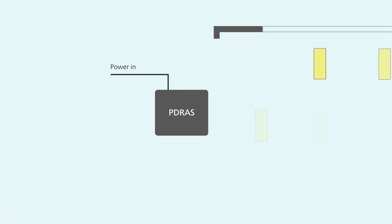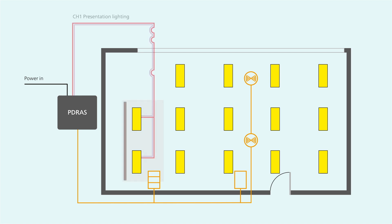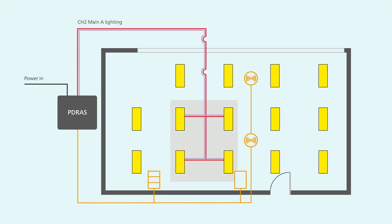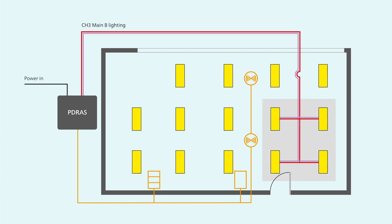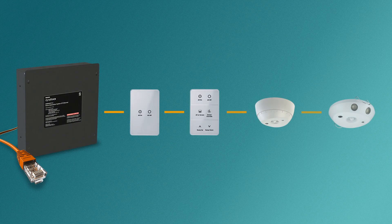One controller supports up to four sensors and/or four wall switches with easy plug-and-play connections. Each controller can accommodate up to five lighting zones — from presentation lighting to general room lighting zones, to window lighting zones, and your plug-load zone. All components are daisy-chained using plug-and-play RJ45 connections for hassle-free installation. The network devices can be connected in any order.